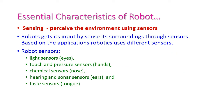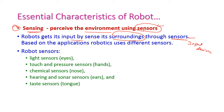The first characteristic is sensing — perceiving the environment using sensors. The purpose of a sensor is to observe the environment. The robot gets its input by sensing its surroundings through sensors, which act as input devices. Based on the application, the robot uses different sensors: light sensors, touch and pressure sensors, chemical sensors, hearing sensors, and taste sensors.